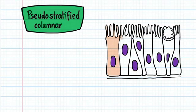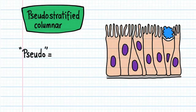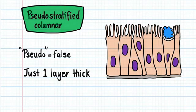This is what pseudo-stratified columnar epithelium looks like. Pseudo means false. The epithelium looks stratified, but it's actually not. There is only one layer of cells present because all of the cells touch the basement membrane.